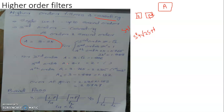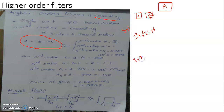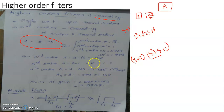For a third order Butterworth filter, a second order filter is cascaded with a first order filter. The third order Butterworth polynomial is (s + 1)(s² + s + 1). In the second order polynomial s² + s + 1, the coefficient of s is 1. Therefore, the second order filter in the cascaded third order filter must have a passband gain of 3 - 1 = 2, while the first order filter can have any gain value.